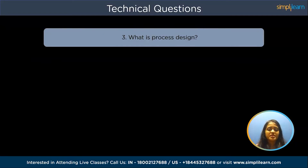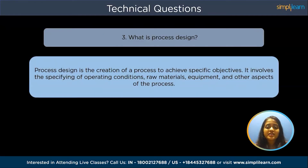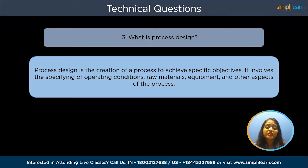What is process design? Process design is the creation of a process to achieve specific objectives. It involves specifying operating conditions, raw materials, equipment, and other aspects of the process. Process design also includes the determination of desired output levels, process flow diagrams, and other process characteristics.